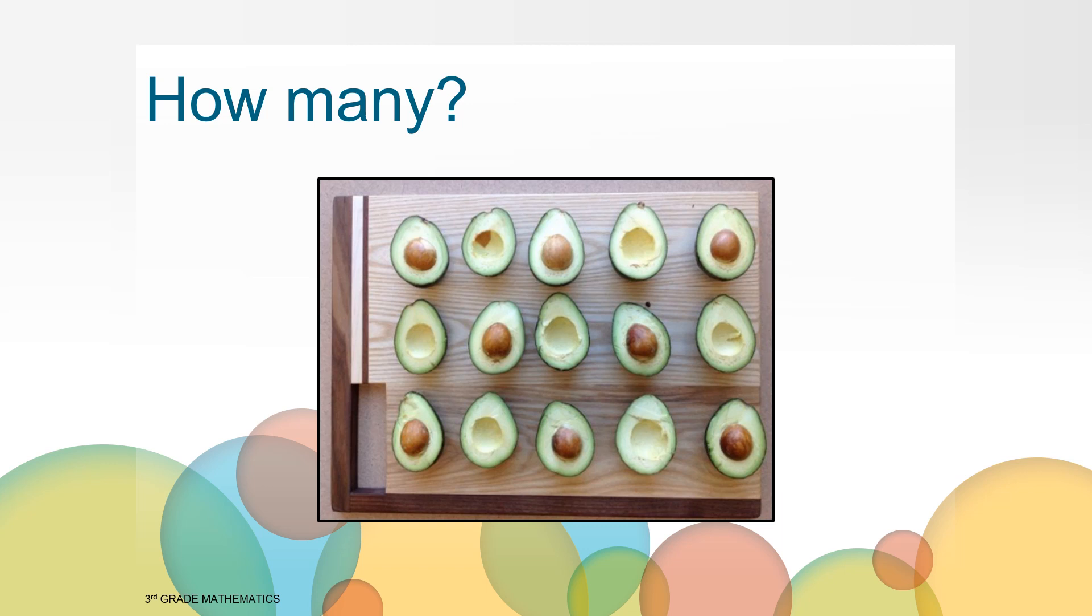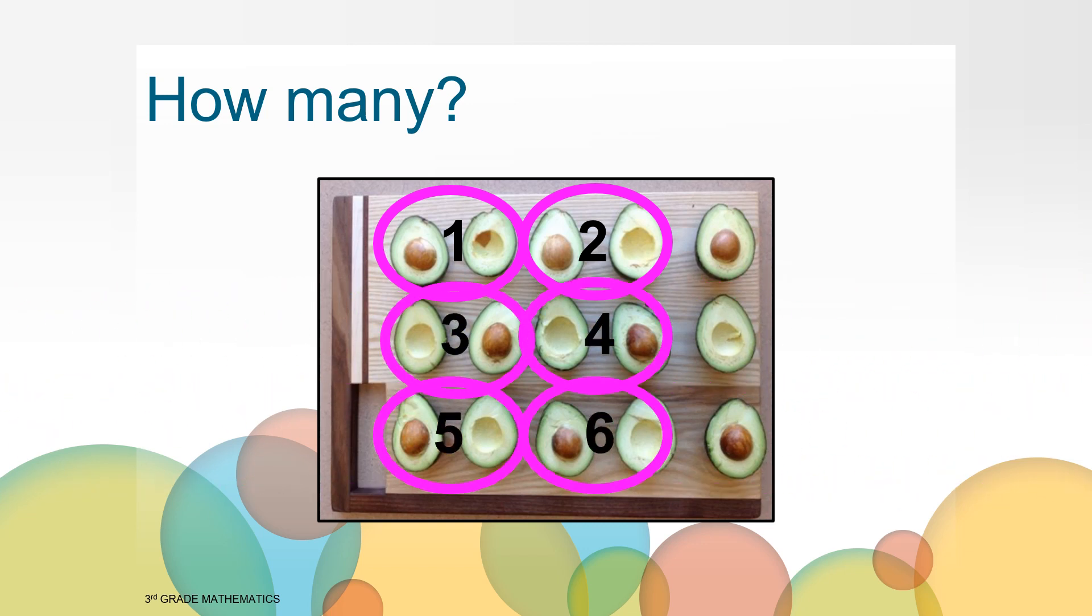One way you may have thought about figuring this out is by matching halves together. Let's look at what this could look like. I'm thinking about grouping one half with a pit, one half without a pit, so we could group these two halves together and that gives us one whole avocado. Then I can group these two halves together, and that gives us two whole avocados. If we continue like that, we can see three, four, five, six whole avocados so far. I'm going to group two more halves like this to make seven wholes, and I have one half left over. So how many whole avocados do we see?